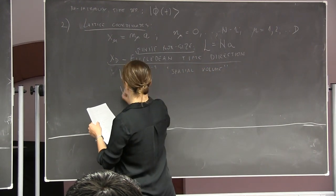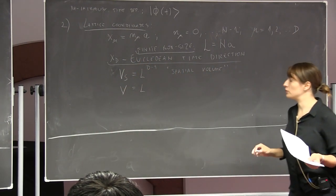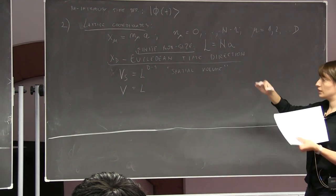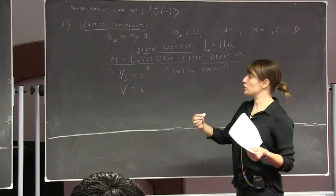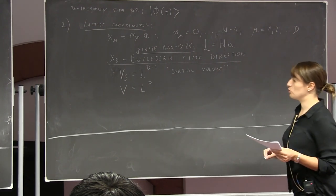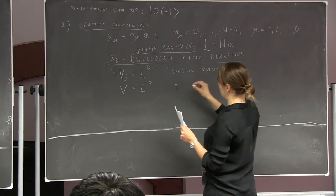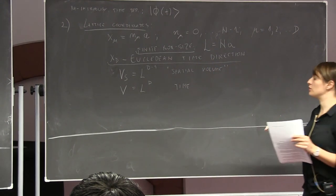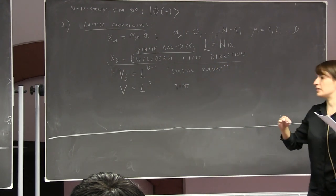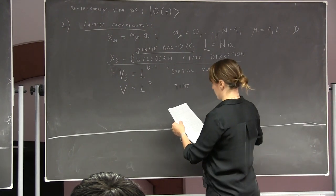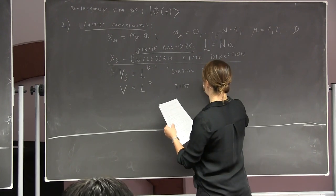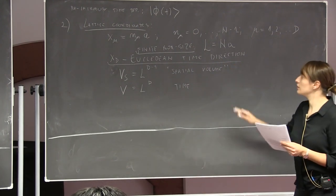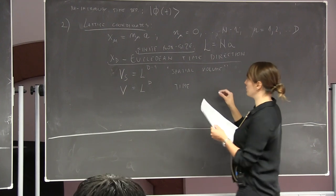We will also introduce the time extent T in physical units. In this case T equals N_tau times A, in units of the lattice spacing A, which is usually given in fermis. One can in principle play between different time and spatial extents, which helps in practical considerations of lattice QCD. But we will consider that time and spatial directions are symmetric until otherwise noted.